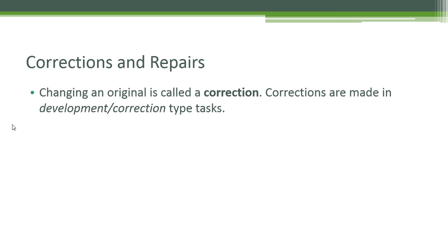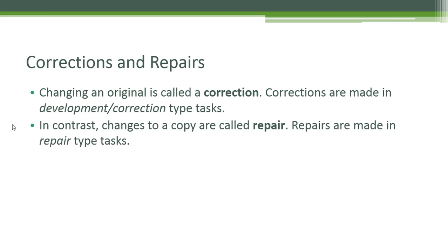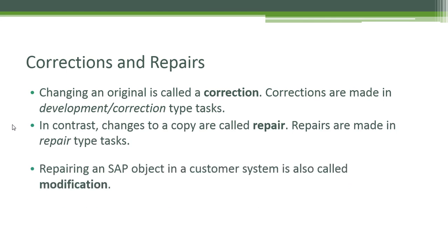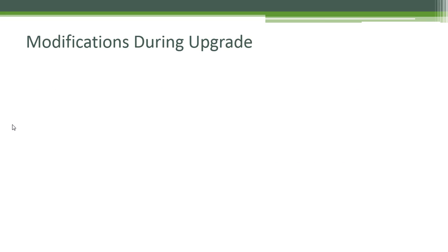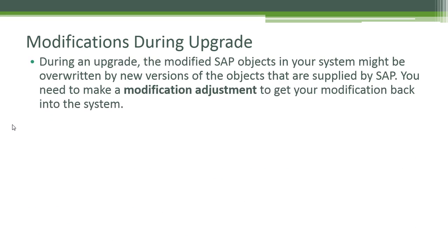Corrections and repairs: Changing an original is called a correction. Corrections are made in development correction-type tasks. In contrast, changes to a copy are called repairs. Repairs are made in repair-type tasks.